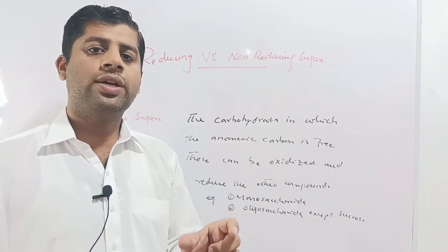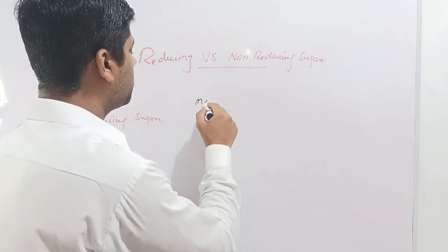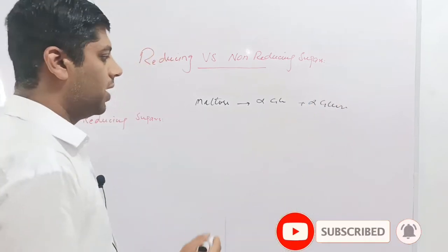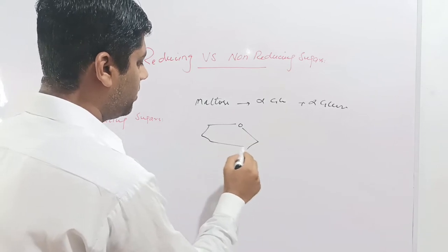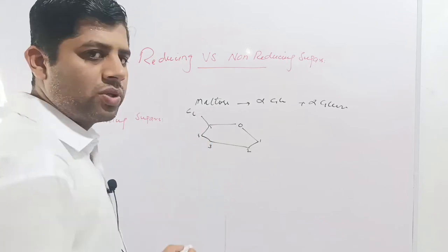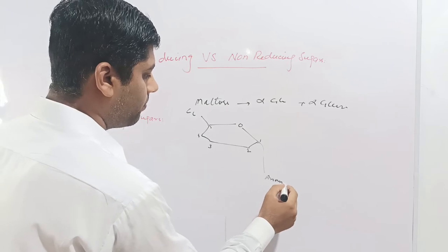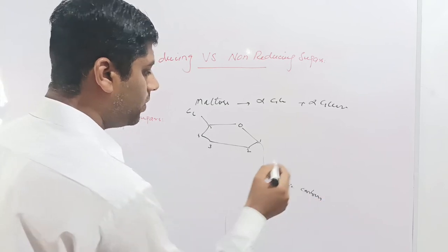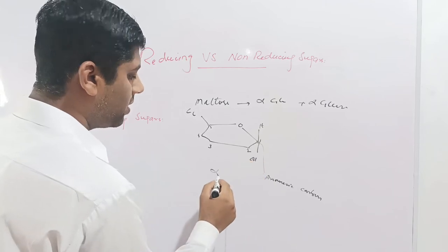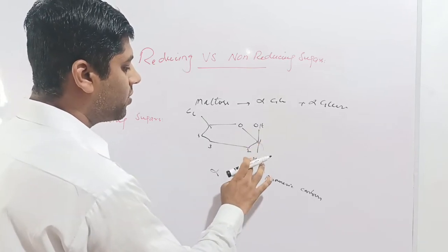I am going to draw the diagram of maltose, a disaccharide. Maltose is composed of two alpha glucose units. Glucose has a ring structure in aqueous media — a hexagonal structure with carbon number one, two, three, four, five, and carbon six attached to carbon five. The first carbon, derived from the carbonyl group, is called the anomeric carbon. On the first carbon, if hydrogen is on the upper side and hydroxyl is on the lower side, this is called alpha glucose.